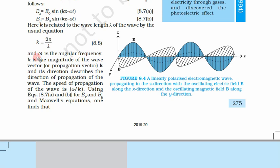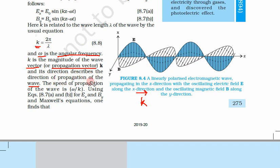Omega is the angular frequency of this wave. Small k, without any vector sign, is the magnitude of the wave vector, sometimes called the propagation vector. Bold k is the vector form, and its direction describes the direction of propagation of the wave.